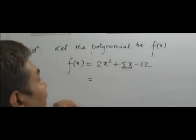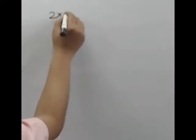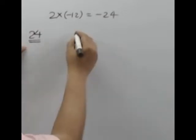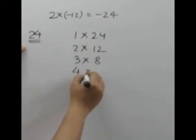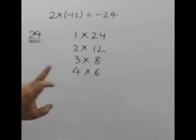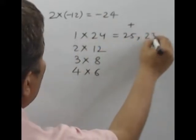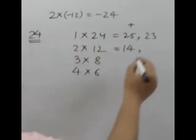Factorize करने का नियम यह है कि हम लोग इस middle term को split करेंगे। नियम यह है कि इसके लिए यह constant term और यह constant term — यह दोनों multiply होगा। Multiply होने के बाद यह हमारा आएगा: minus 24. अगर हमें minus 24 आया, तो 24 को factorize करेंगे: 1×24, 2×12, 3×8, 4×6 — दो-दो factor के रूप में लिखा जा सकता है। अगर हम 1 और 24 को जोड़ेंगे तो 25 आएगा, घटाएंगे तो 23 आएगा। 2 और 12 को जोड़ेंगे तो 14 आएगा, घटाएंगे तो 10 आएगा।